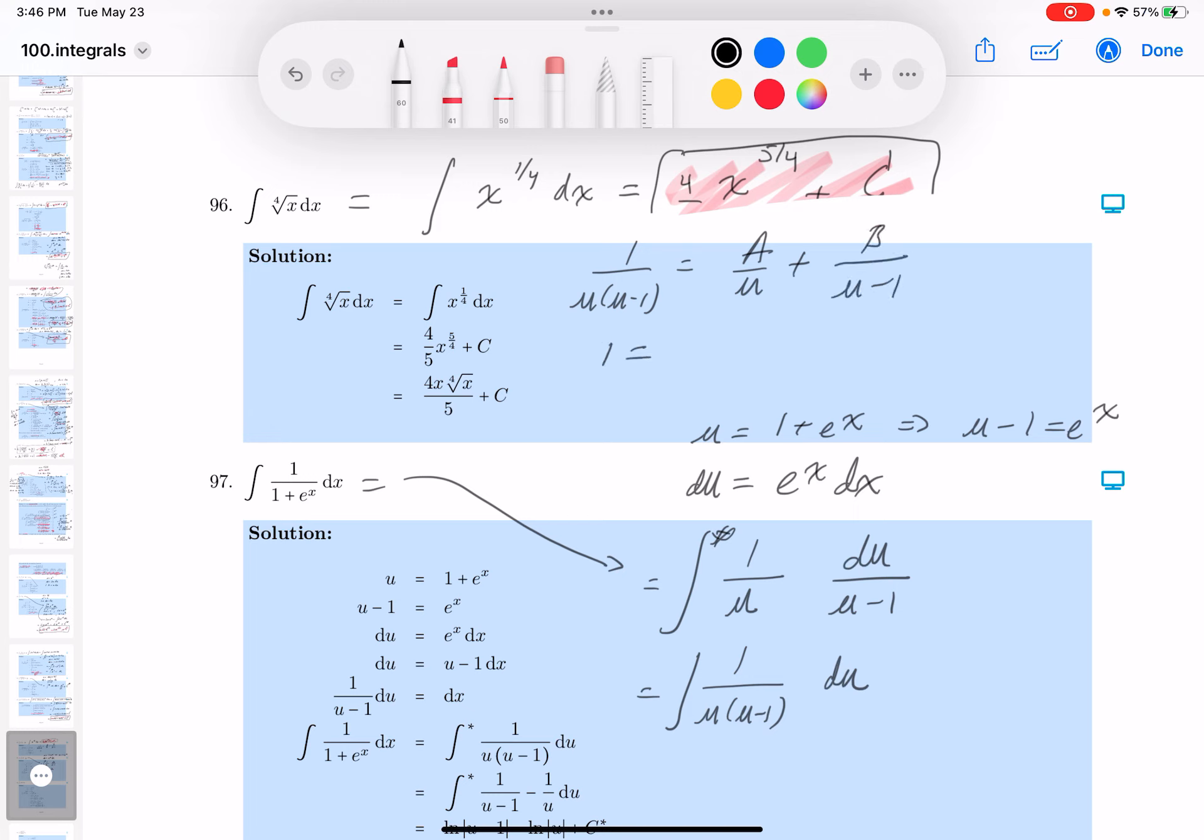You would get 1 equals a times u minus 1 plus b times u. I'll let u equals 0. That would give you a equals minus 1. And then I'm going to say u equals 1. And that would lead to b equals 1. I can write that down now.